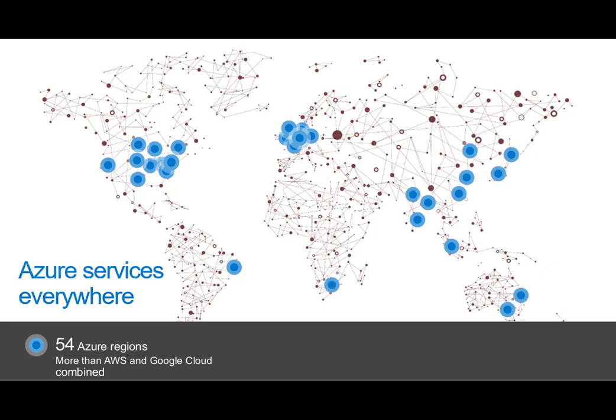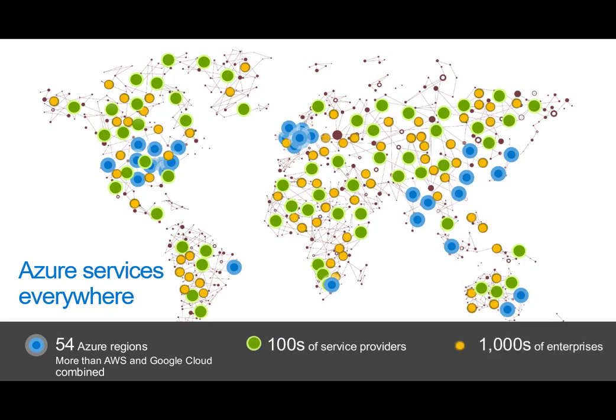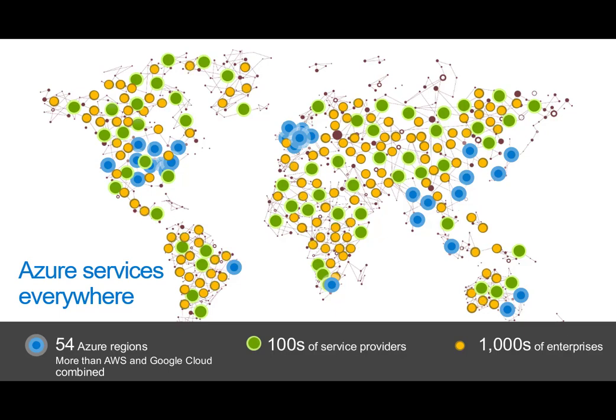Yes, Azure has more regions than AWS and Google combined today, but there are still huge gaps in coverage. And until we can break the speed of light, latency matters. Until we have 100% global 5G coverage, bandwidth matters. Until all the world unites, regulatory compliance requirements will still matter. And in order to meet those needs, Azure Stack exists — in service providers, in enterprises, going where Azure cannot go, delivering a consistent hybrid experience. Thank you so much for listening, and I hope you have a wonderful rest of your day.